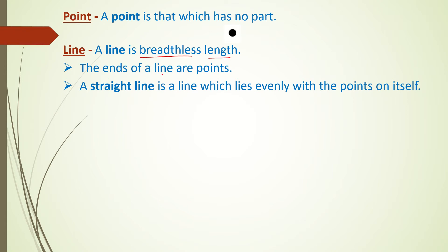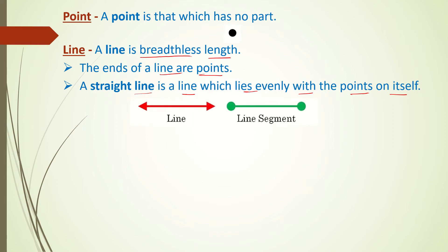The ends of a line are basically points, which gives us a line segment. A straight line is a line which lies evenly with the points on itself - every point is present on a straight path. This is a line which can be extended in both directions, and this is the line segment whose endpoints are certain fixed points.